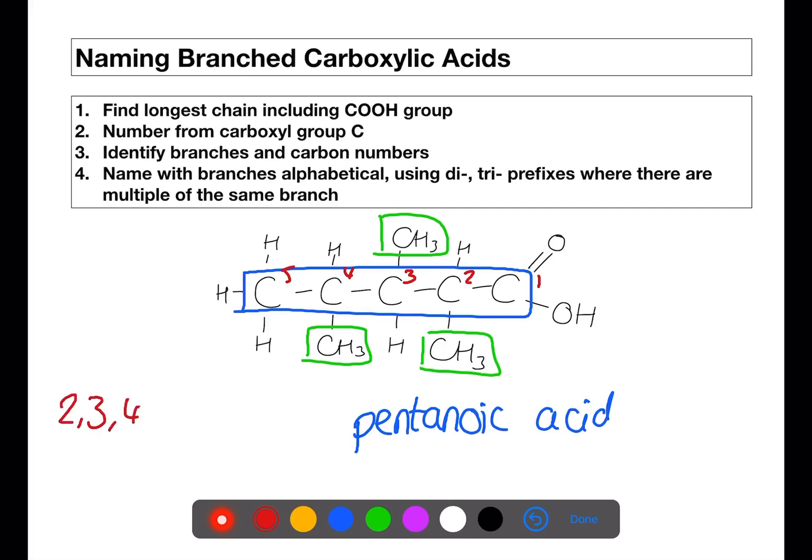So we put those numbers in at the start. We then need to use the prefix tri to say that we have three of them followed by the name of the branch methyl. So altogether this molecule is two, three, four trimethyl pentanoic acid.